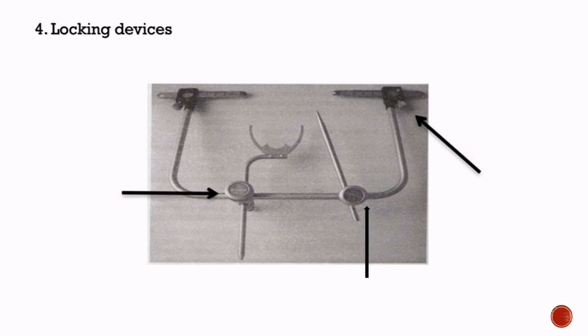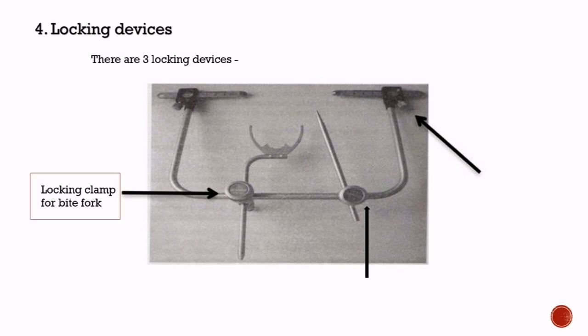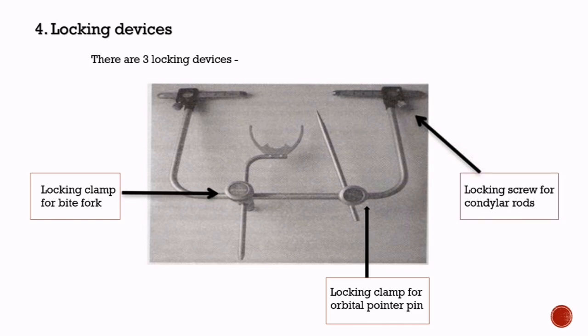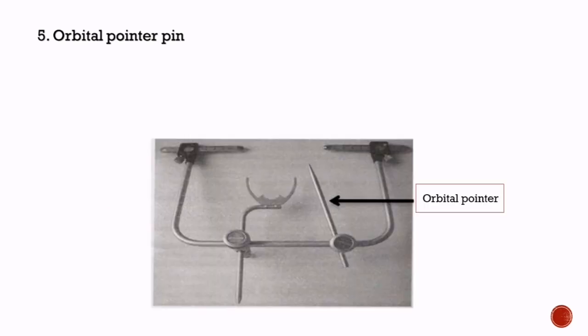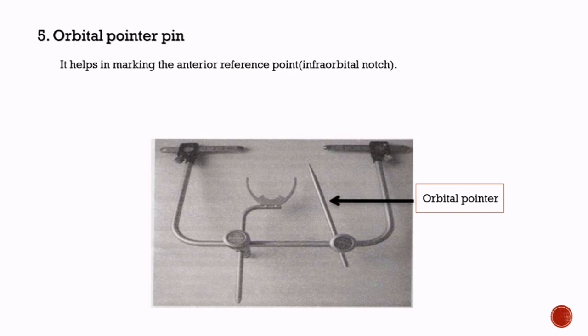Fourth is locking devices. There are three locking devices: a locking clamp for the bite fork, which attaches the bite fork to the U-shaped frame; a locking clamp for the orbital pointer pin, which locks the orbital pin onto the U-shaped rod; and a locking screw for the condylar rods. Fifth is the orbital pointer pin, which helps in marking the anterior reference point, that is the infraorbital notch, and it is present only in the arbitrary face bow.